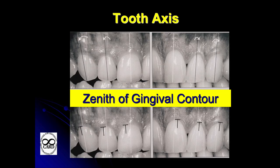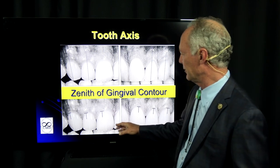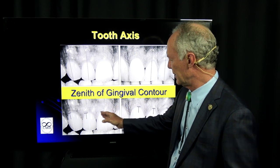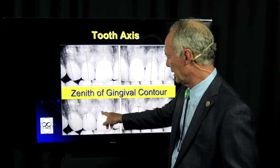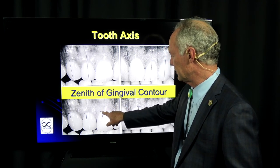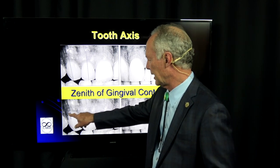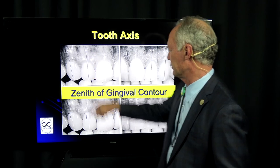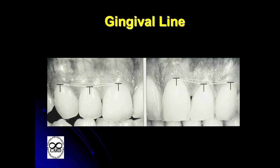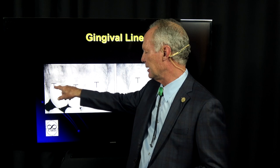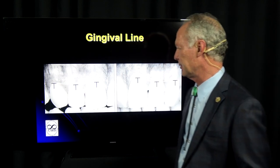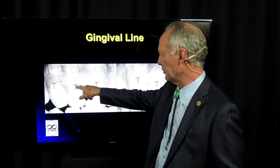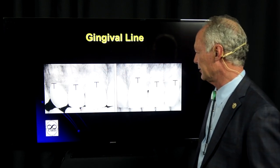The height of gingiva is not in the center of the tooth — it's actually toward the distal of the tooth. This is the height of the gingival line on the central, the lateral, and the cuspid. The gingival line of the central incisor and cuspid is a little more apical than the height of the gingival line on the lateral incisor.